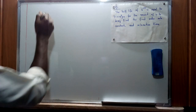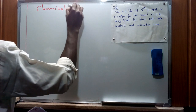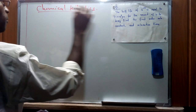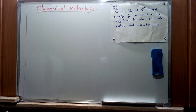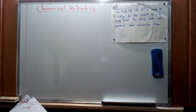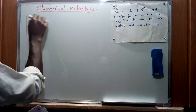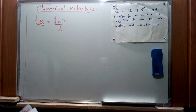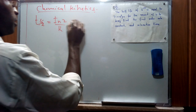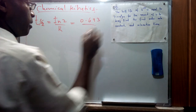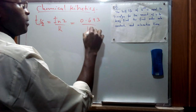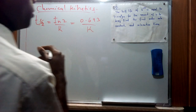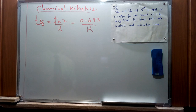When we are trying to look at the concept from chemical kinetics, we are going to have the rate constant represented by the formula for half-life, which is the natural log of 2 over k. We will develop a relationship between chemical kinetics and radioactivity, since both of them represent decay curves.